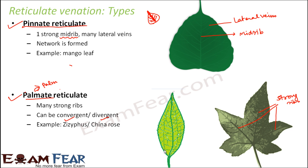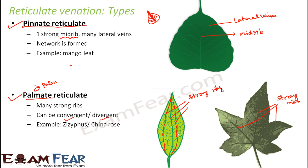Continuing with the palmate reticulate leaf, multiple strong ribs are visible throughout — this one is a strong rib, this one is a strong rib, and this one is also a strong rib. So these are all strong ribs, and these leaves demonstrate palmate reticulate venation.